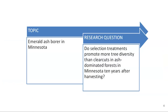First, it's good to identify the topic. This is generally a pretty easy thing to do. In my case, I want to study emerald ash borer in Minnesota. It takes a while to get to that research question — you can see the research question listed here, that's ultimately where we ended up. But it's not necessarily easy to write that research question; it took some time to develop it with thought and with clarity.